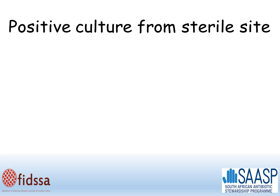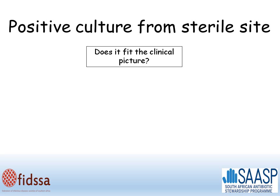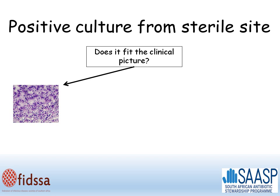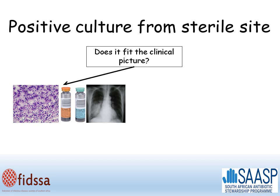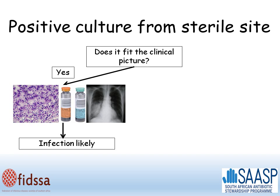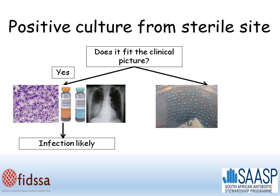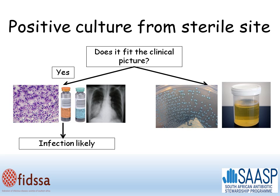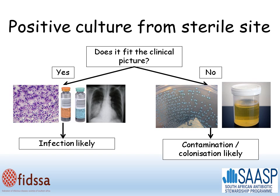Considering a positive culture from a sterile site, the question you should ask yourself is: does this result fit the clinical picture? For example, if a pneumococcus — a Streptococcus pneumoniae — is grown from a blood culture in a patient with pneumonia, then this clearly fits the clinical picture, and the result very likely represents true infection. However, if you grow an enterococcus on a urine sample from a patient who has no urinary symptoms and has no white cells in the urine, this clearly does not represent a clinical problem and the sample represents contamination or colonization.